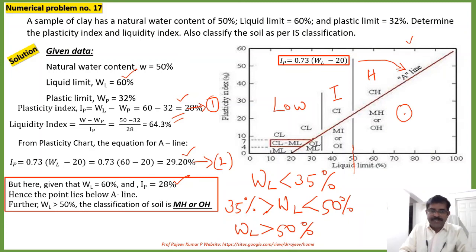So it is classified as MH or OH. You need to remember this. This is very important. Because you should have an idea about the condition for low, intermediate and highly compressible soils. That is liquid limit less than 35 percentage, liquid limit between 35 to 50 percentage, and liquid limit greater than 50 percentage. So this is the answer corresponding to this question.